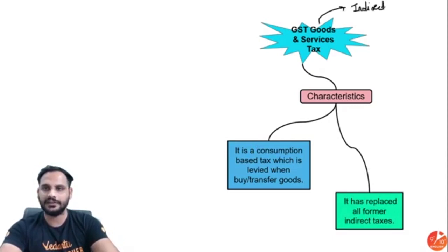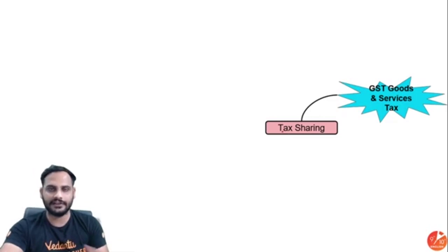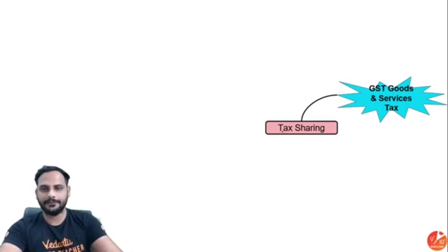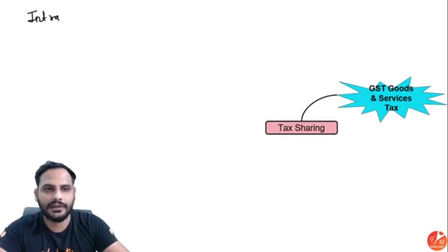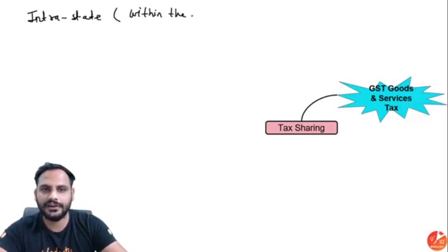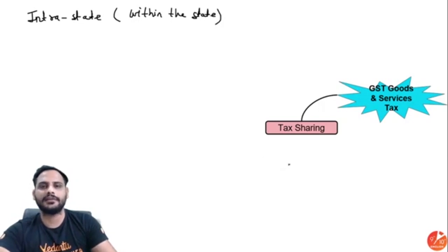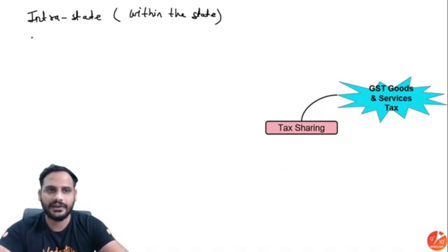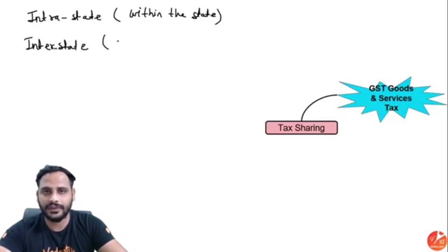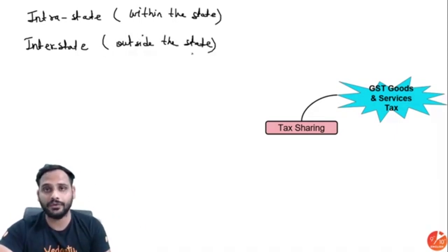There are two kinds of trade movement: intra-state, which means within the state — for example, buying in Jaipur and selling in Jodhpur, both within Rajasthan — and inter-state, which means between different states — for example, buying in Jaipur and selling in Bangalore.